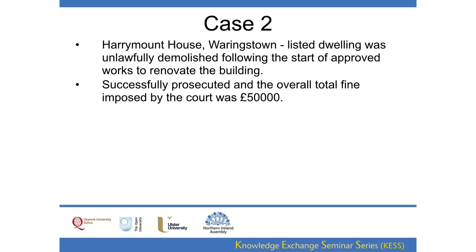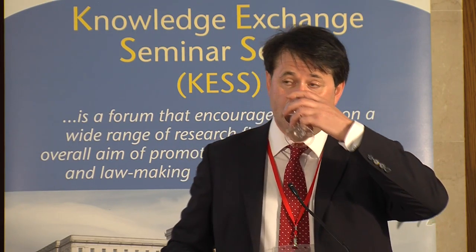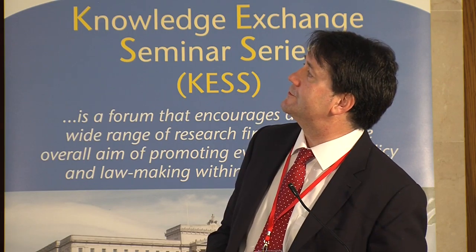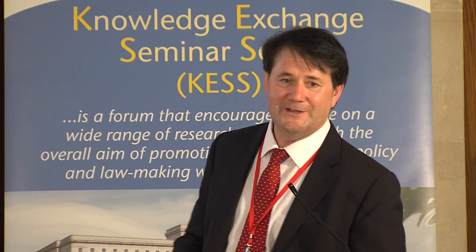Case two is Harrymount House in Waringstown — a very famous case — which was a listed dwelling. It had permission to carry out alterations, but on a Saturday morning the bulldozers went in and demolished it; the argument was that it had fallen down. It was prosecuted and a total fine of £50,000 was imposed by the court — the highest in this jurisdiction and seen as a major breakthrough. But on appeal, the £15,000 fine imposed on each of the two owners was reduced to £500, and the contractor's £20,000 fine was reduced to £100.